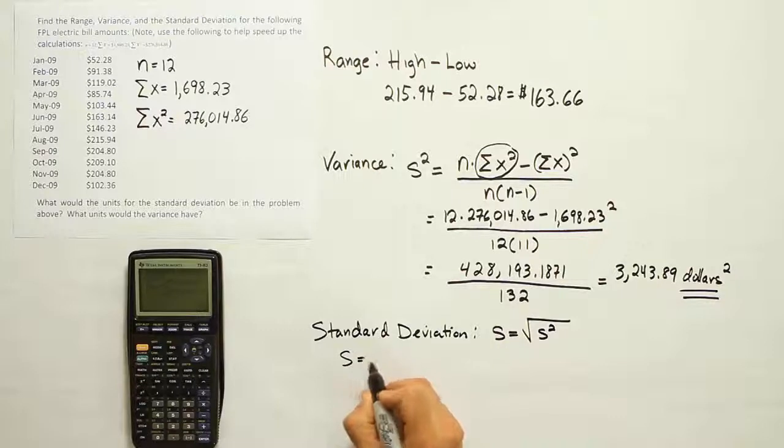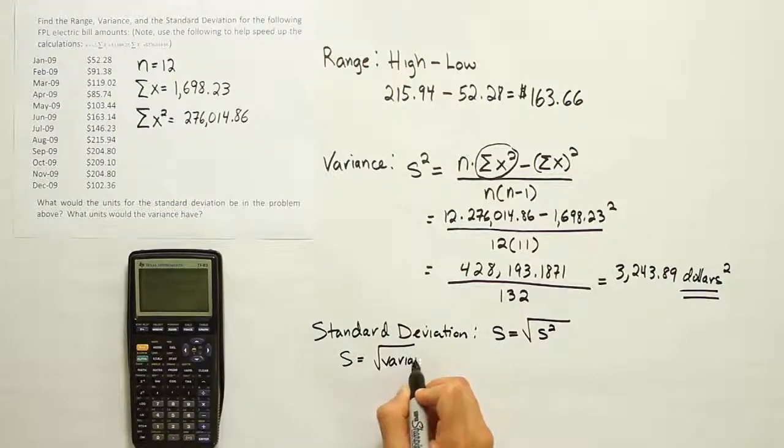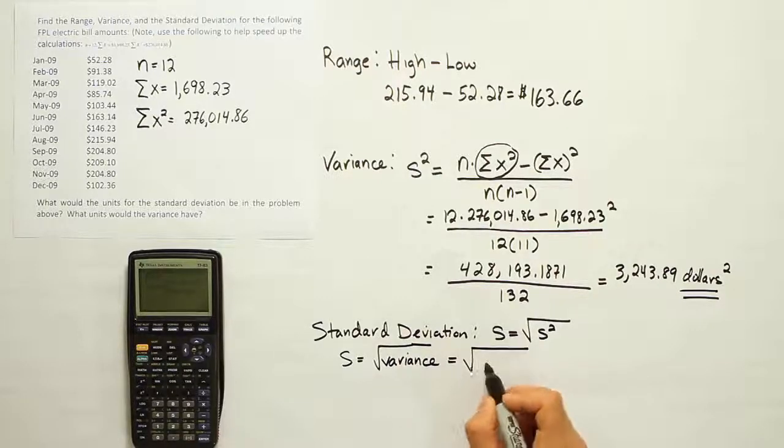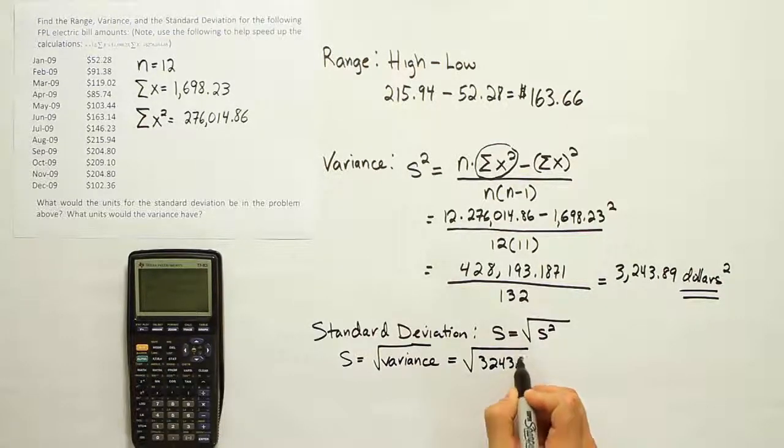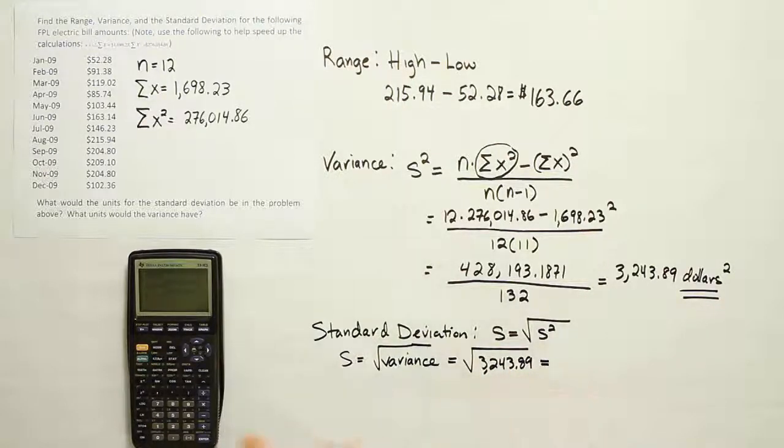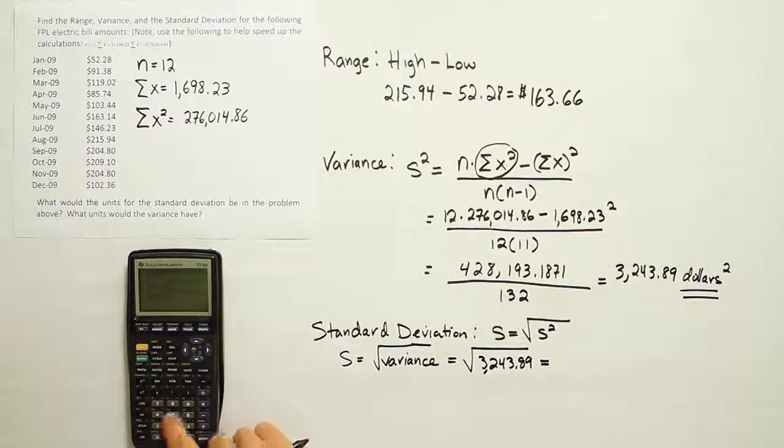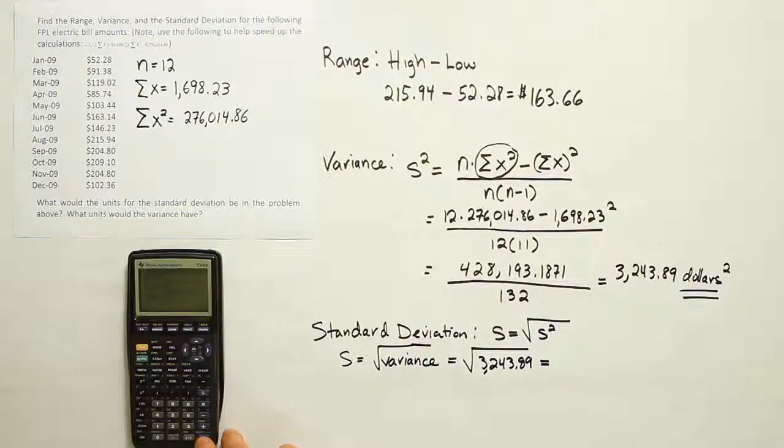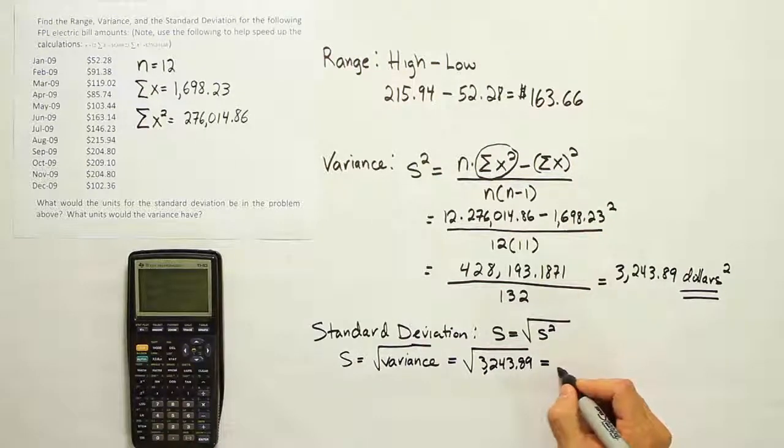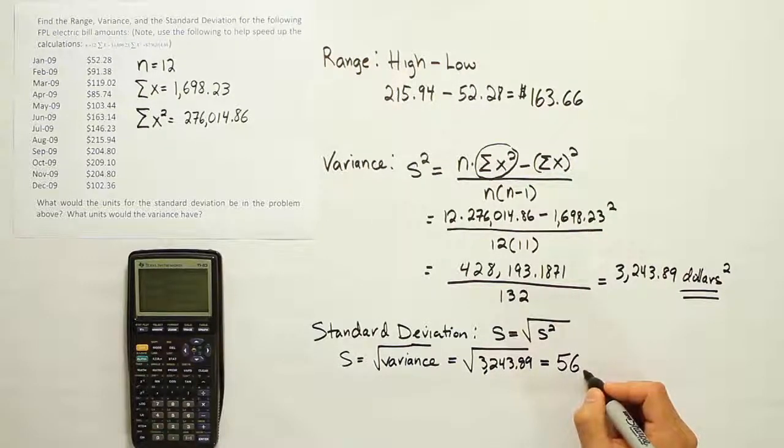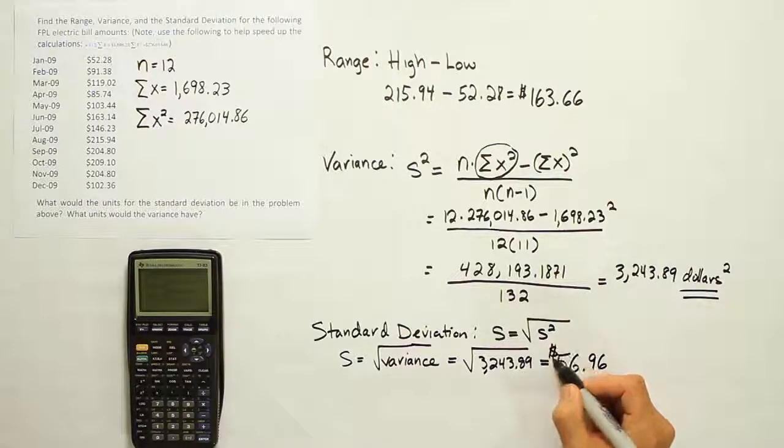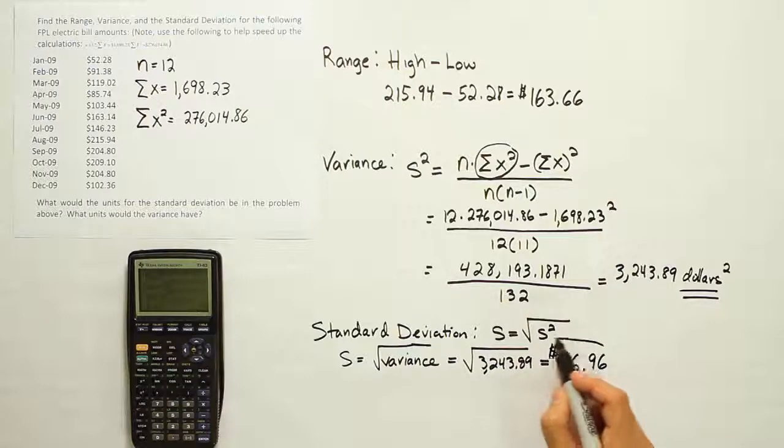The standard deviation will be the square root of the variance. And for us, that's going to mean the square root of 3,243.89. And when you take the square root of that, you end up with, let's do that. I'm actually raising it to the 0.5 power. If you didn't know, that's another way to do a square root. You can raise the number to the 0.5 power. And we end up with 56.96. And that's going to be 56.96 dollars.